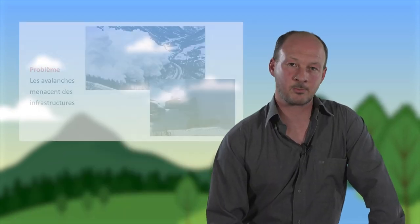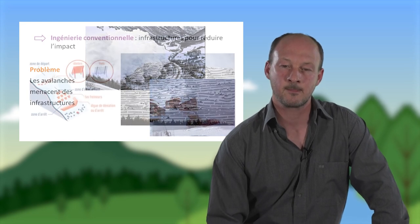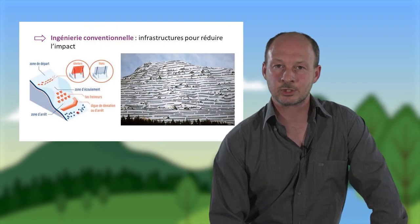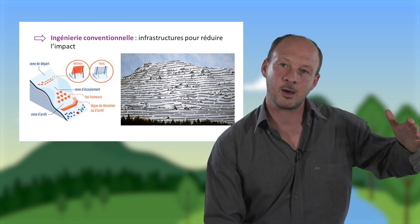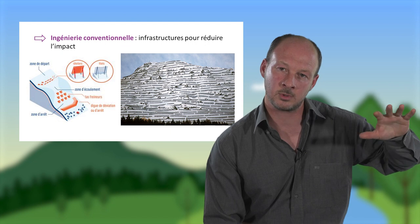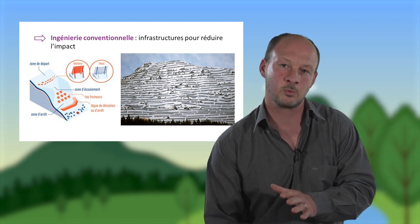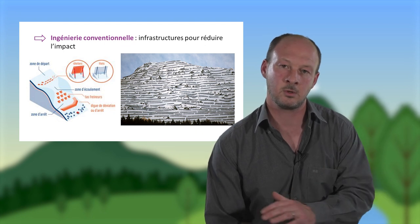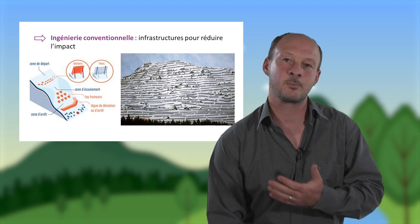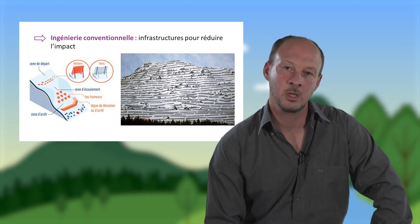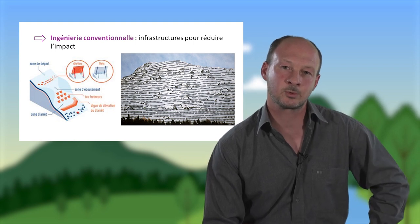Pour les avalanches, on a également des problèmes de dégradation des infrastructures, des habitations et des voitures. La solution préconisée en ingénierie conventionnelle consiste à mettre des filets ou des râteliers dans la zone de départ du manteau neigeux pour le fixer, ou dans la zone d'écoulement pour stopper ou dévier l'avalanche. Le problème, c'est qu'on arrive à des montagnes absolument saturées de ces infrastructures, ce qui nuit considérablement à l'aspect esthétique, alors que le tourisme dans les régions montagneuses est une activité financière importante.